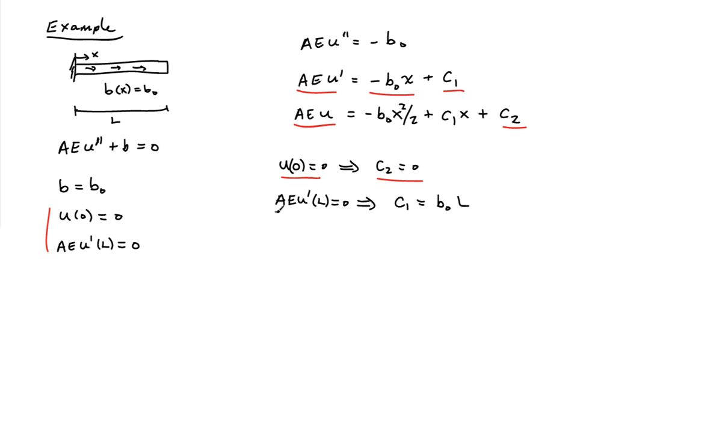And then if I apply the boundary condition that AE u'(l) = 0, that's going to tell me that c₁ equals b₀ times l.